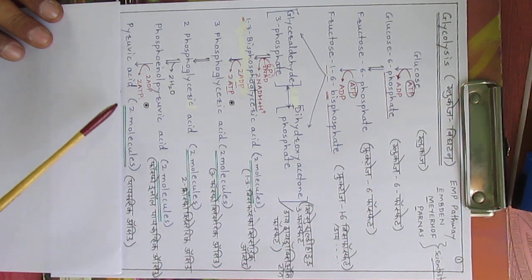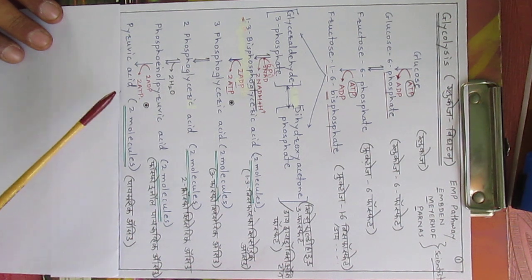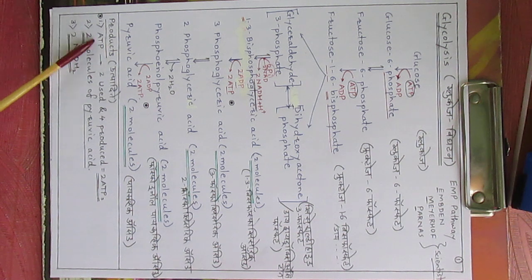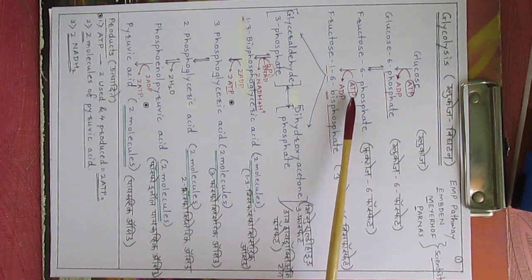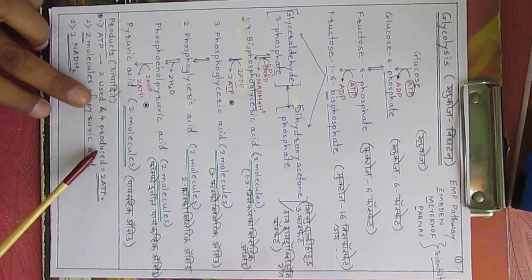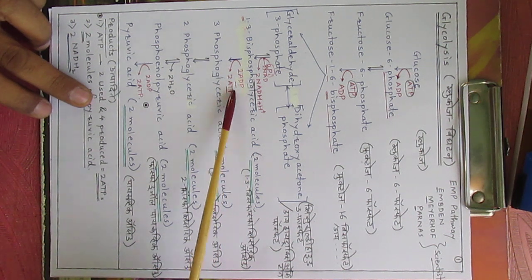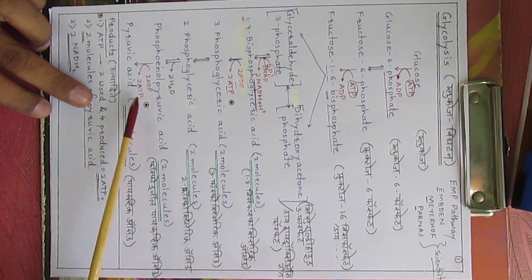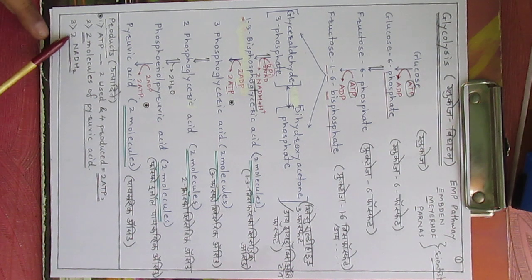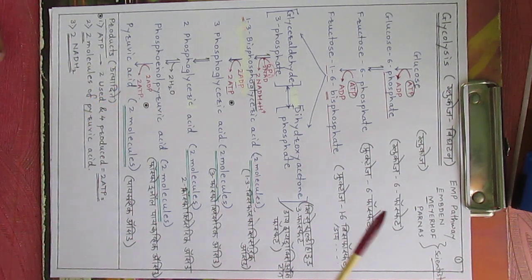This is the entire process of glycolysis. One molecule of glucose (a six-carbon compound) is converted into two molecules of pyruvic acid, each with a three-carbon chain. Regarding ATP: two ATP molecules are utilized for phosphorylation, while four ATP molecules are produced in total — so the net gain is two ATP molecules. Additionally, two NADH₂ molecules are formed. This completes the explanation of the glycolysis process.